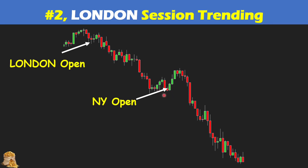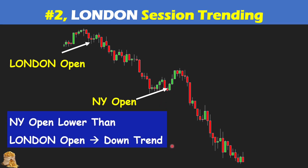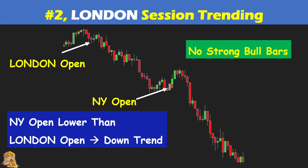Here is a downtrend example. London open is here, New York open is here — the New York open is lower than the London open, so the probability is that it will continue to go down. Between London open and New York open, the market goes down with a relatively tight channel, and a tight channel means a strong market. Mostly we see bear bars rather than bull bars, and the bear bars are consecutive. Even though there are some consecutive bull bars, they are not very strong and didn't reverse the market much. That's why after the pullback, we can continue to trade downward, and the market goes down even further like a measured move.